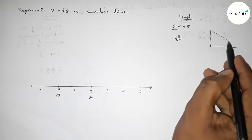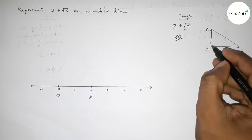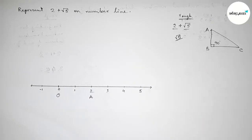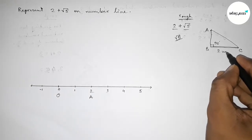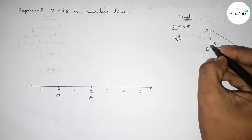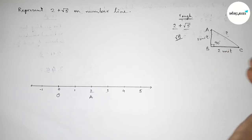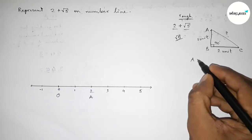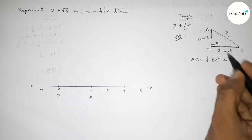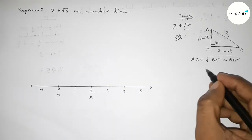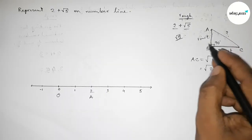Drawing a right triangle with points A, B, C, where the angle at B is 90 degrees. If we take the base BC equal to 2 unit length and the perpendicular AB equal to 1 unit length, then the hypotenuse AC can be found by Pythagoras theorem. AC equals root over BC squared plus AB squared.